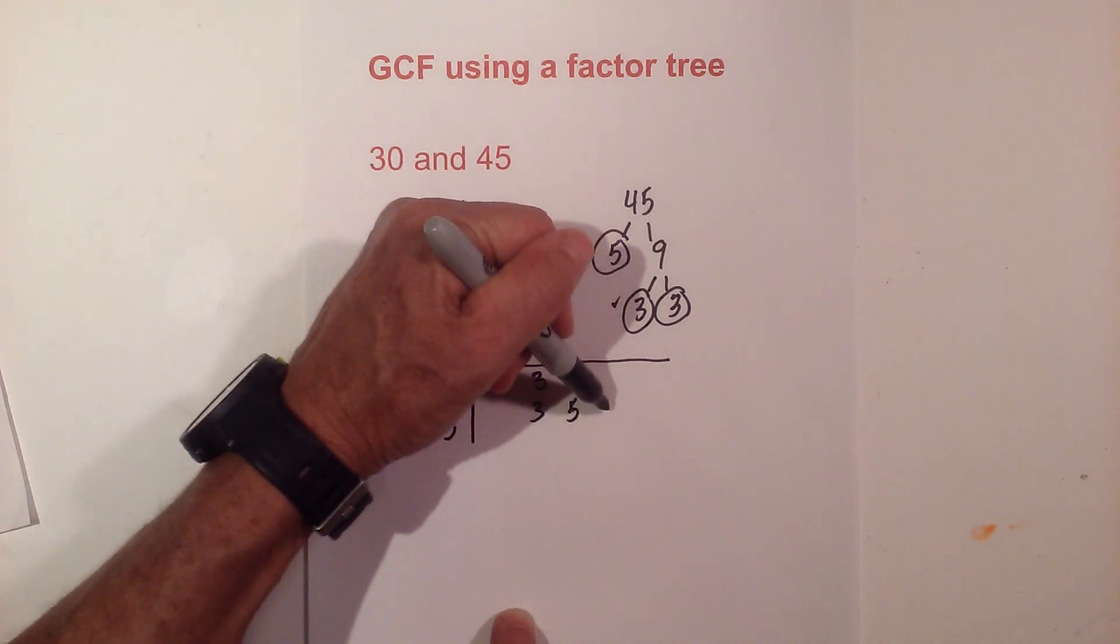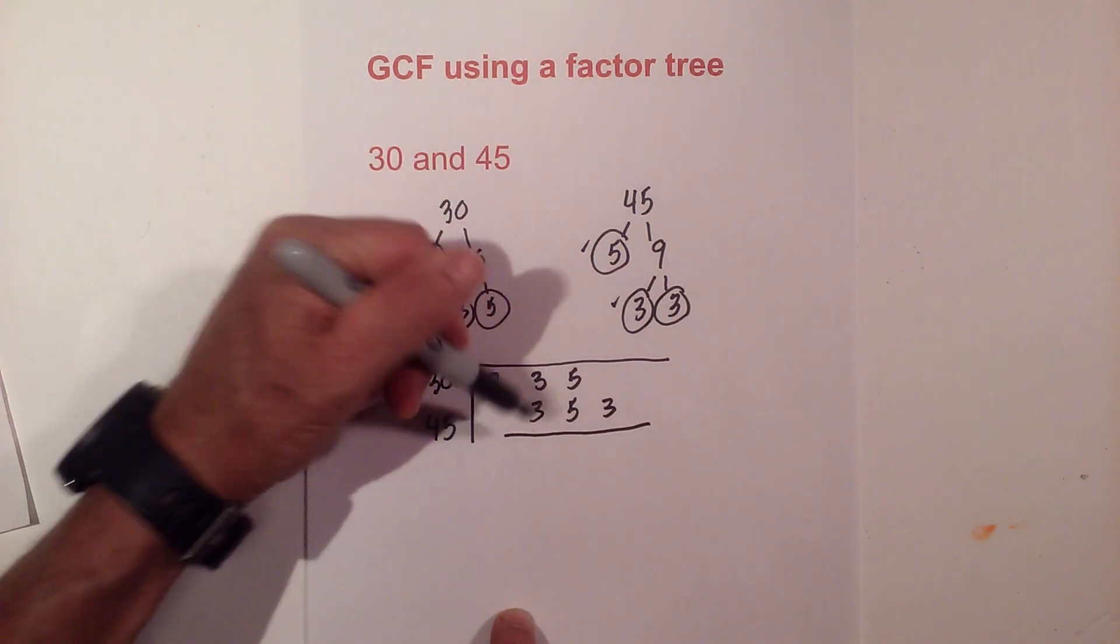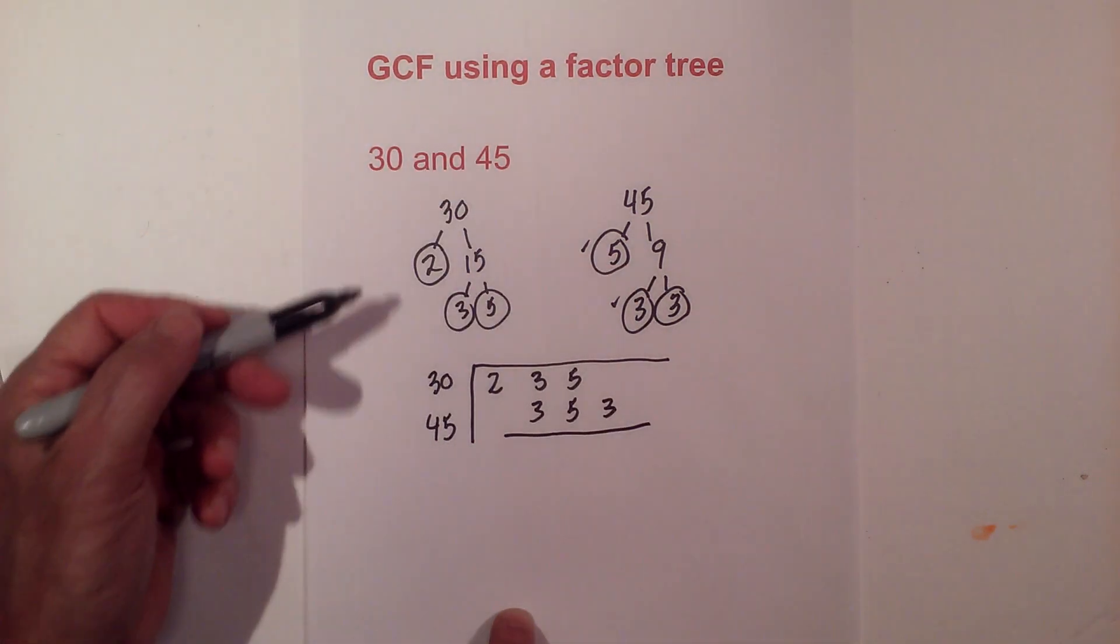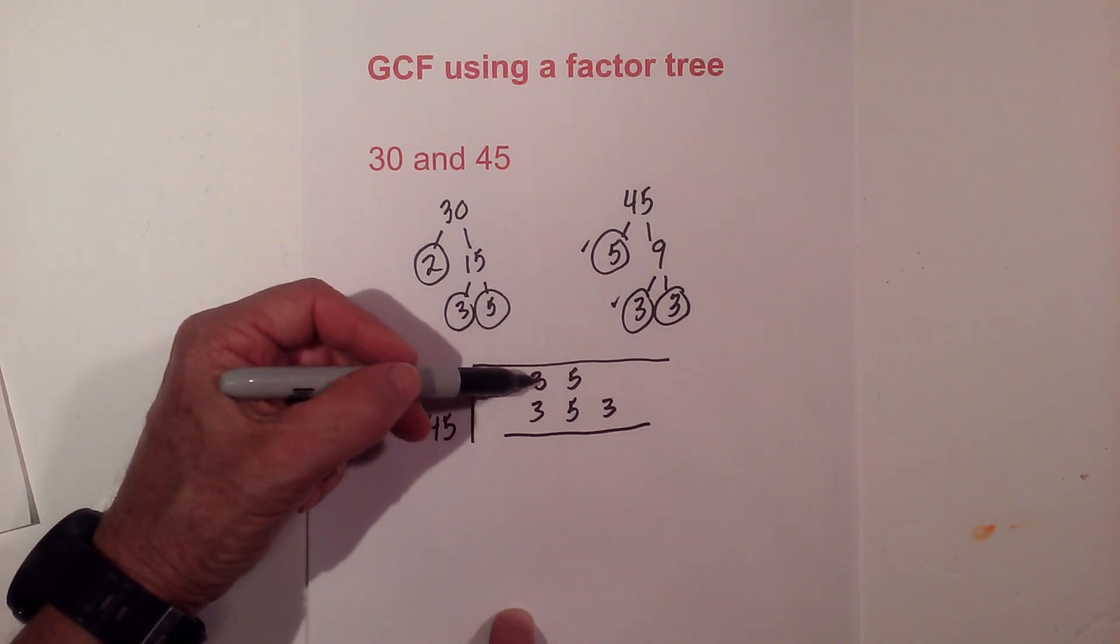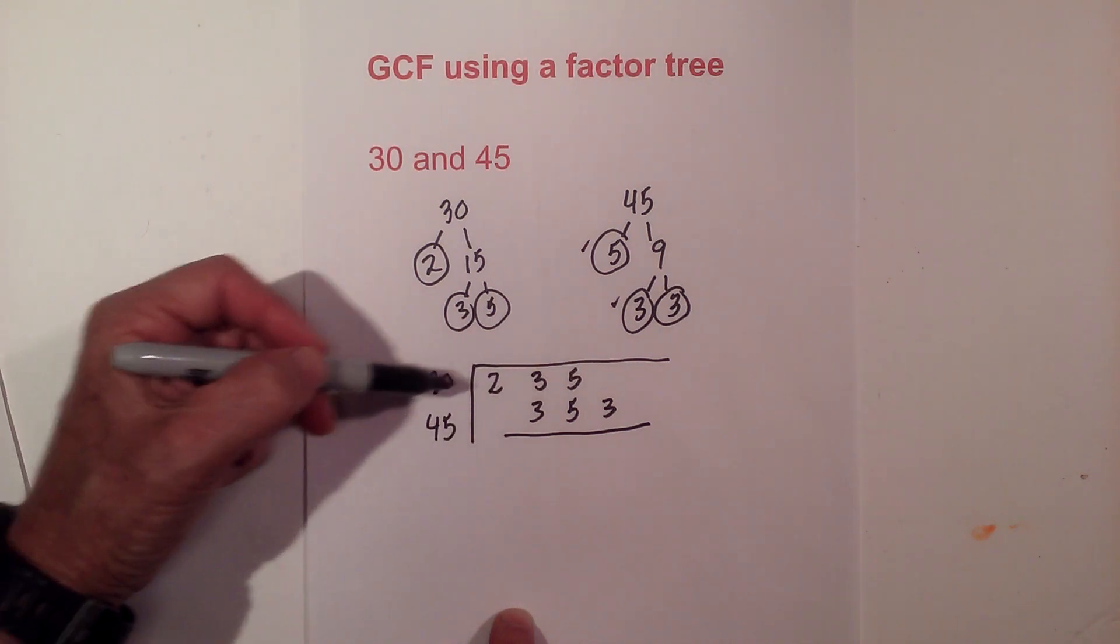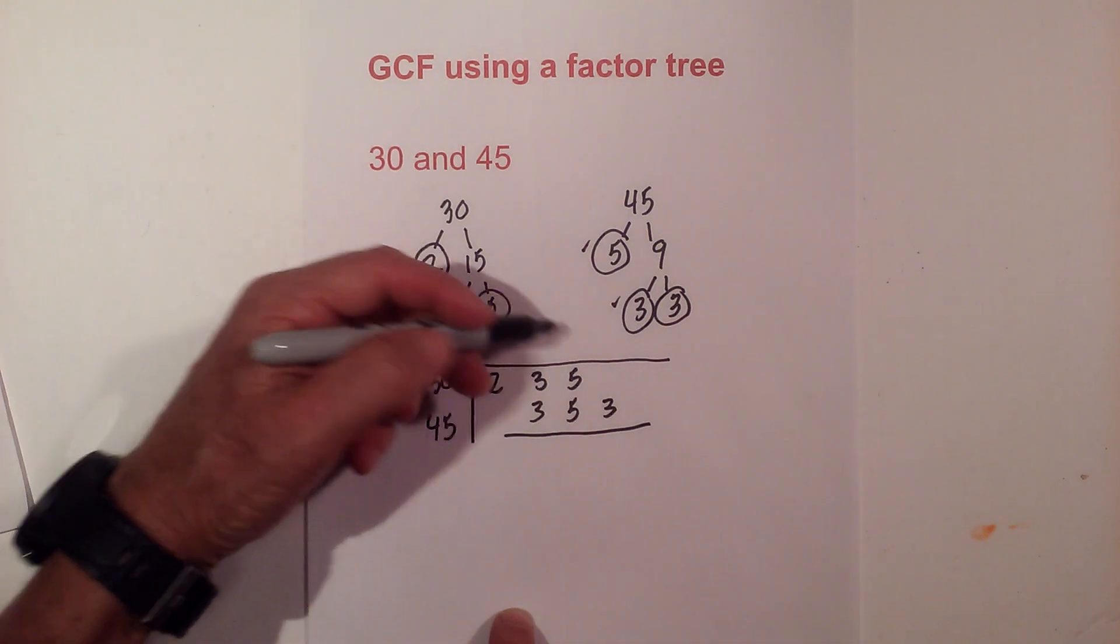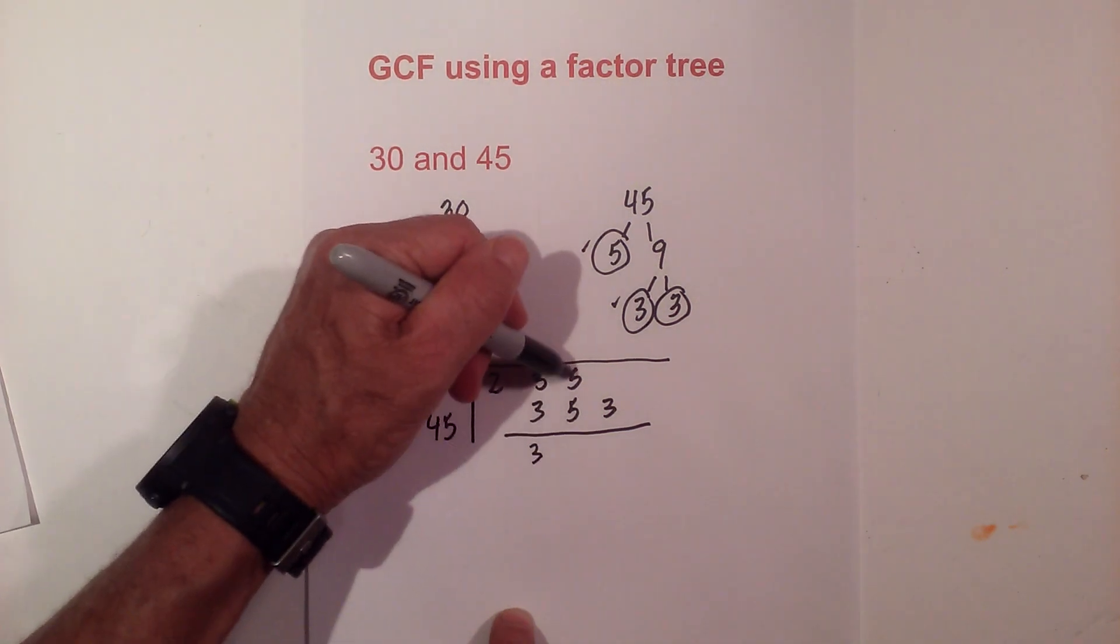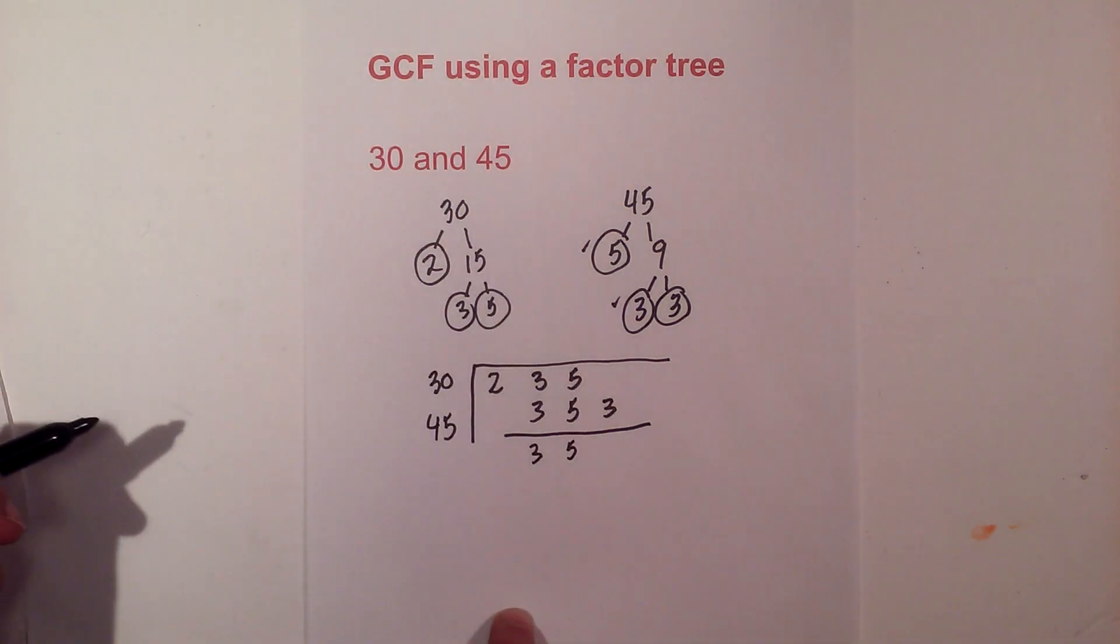Now the rule is, when you're finding the greatest common factor, you must have a pair. Since we're only working with two numbers, we have to have a pair. So we have a pair of threes and we have a pair of fives.